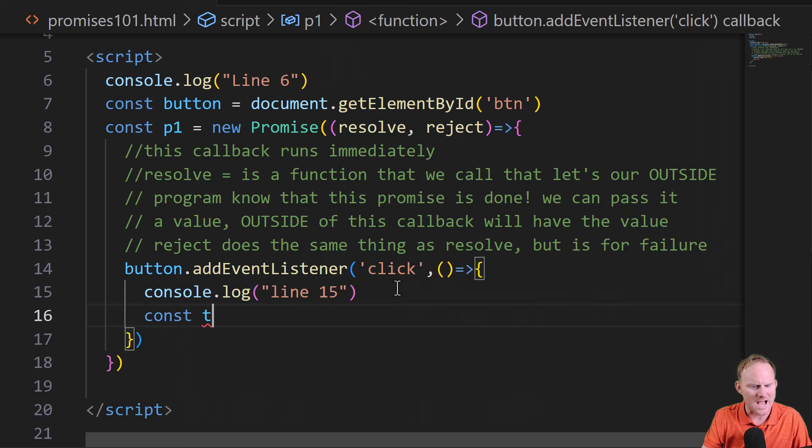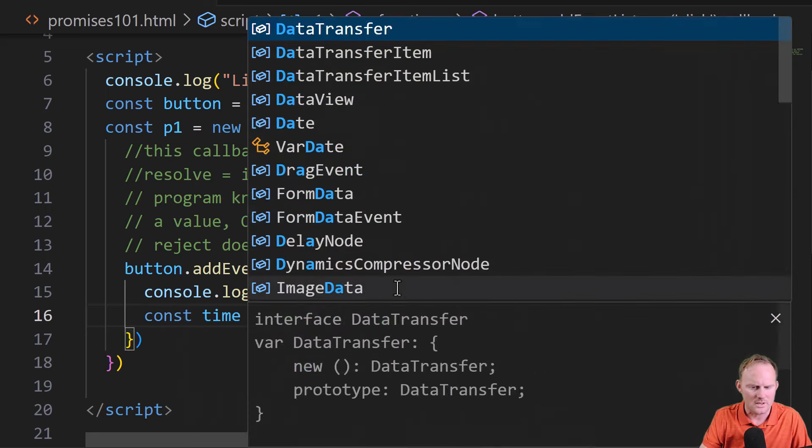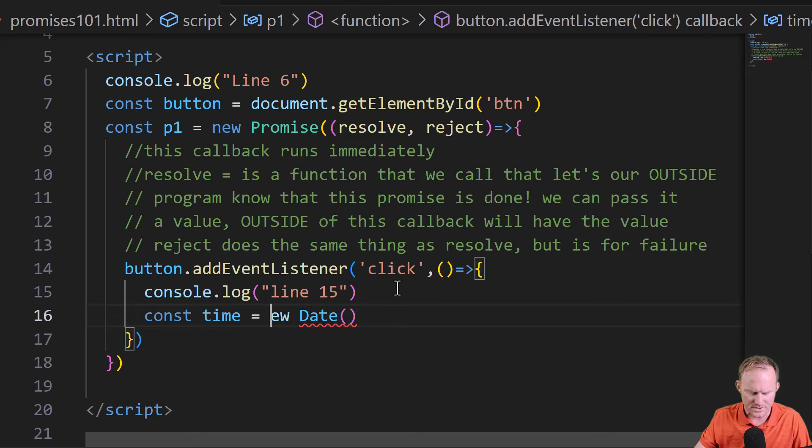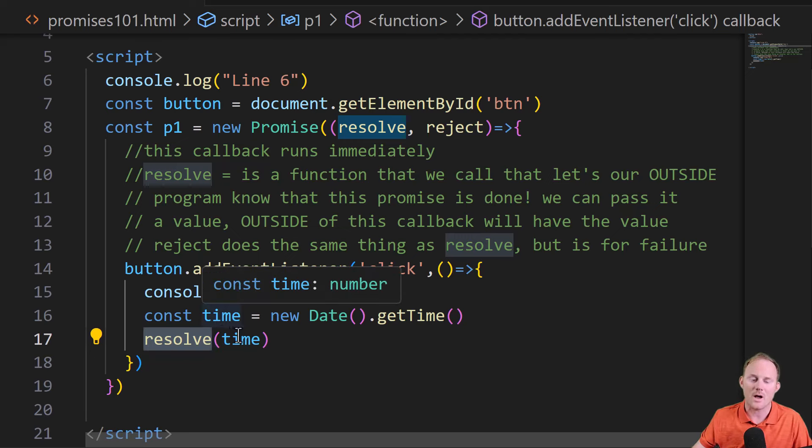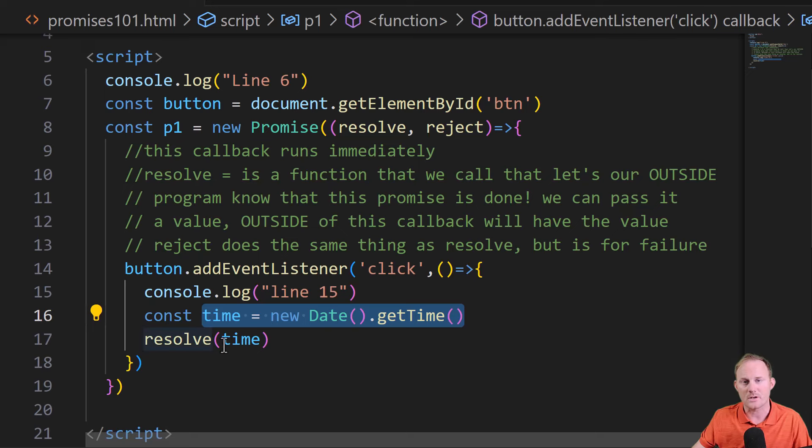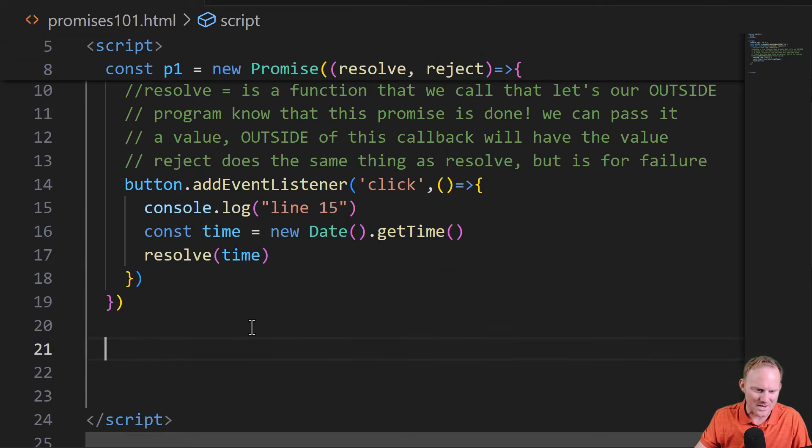So console.log line 15, let's grab the time. So I'll do a new date object, open close. And I'll put on the end of that, get time, open close, just so that we'll have the time. And I will run the resolve function and I will hand it time. This is going to signal to the outside program that our promise is done. And the value we're going to send to it here is our variable on line 16.